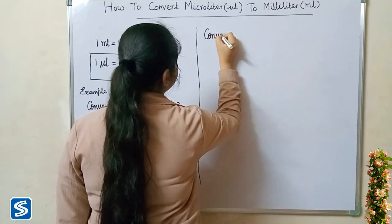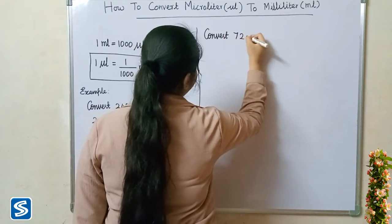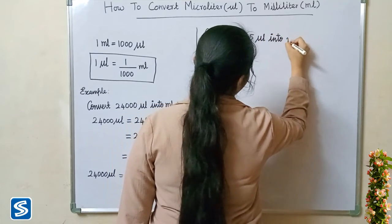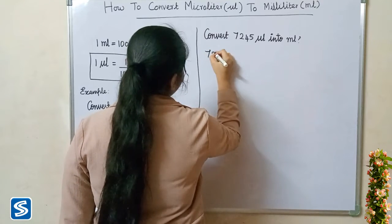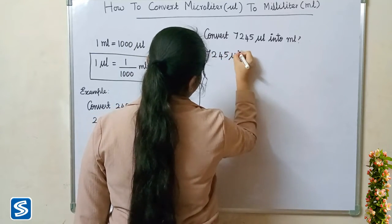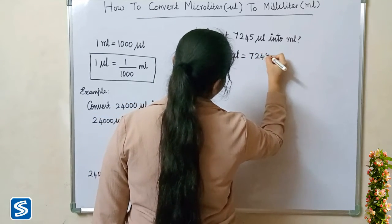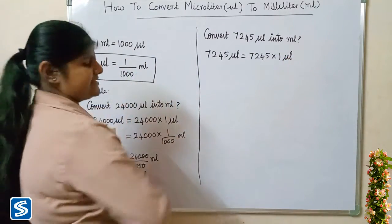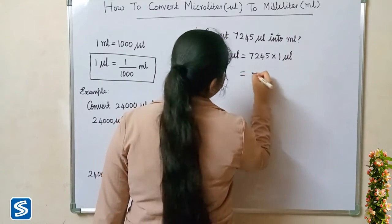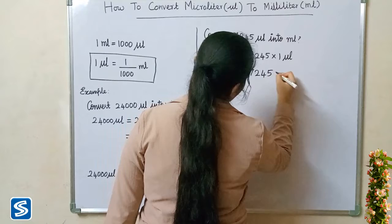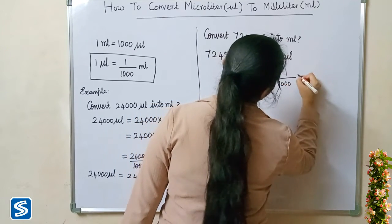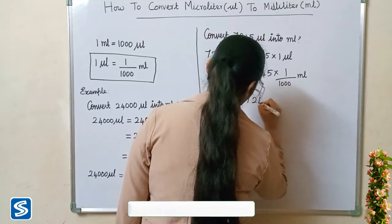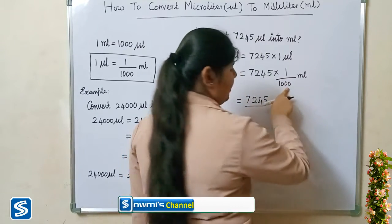Next we will take another example: convert 7,245 microlitres into millilitres. 7,245 microlitres multiply one microlitre. Now we have to substitute one by thousand millilitres in the place of one microlitre. So seven thousand two hundred and forty five multiply one by thousand millilitres. Seven thousand two hundred and forty five multiply one will be seven thousand two hundred and forty five divided by thousand millilitres.